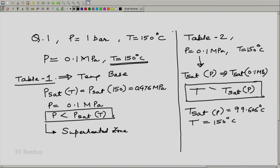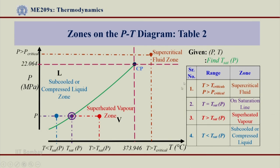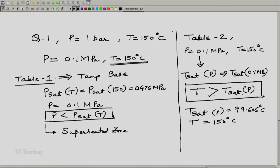Therefore we can say that T is greater than t_sat(p). Going back to the graph, comparing T with t_sat(p): our temperature is 150°C and t_sat(p) is 99.606°C. Since 150°C is greater than 99.606°C, we are in the superheated vapor zone — the same conclusion we got from Table 1. Because T is greater than t_sat(p), we are in the superheated zone.